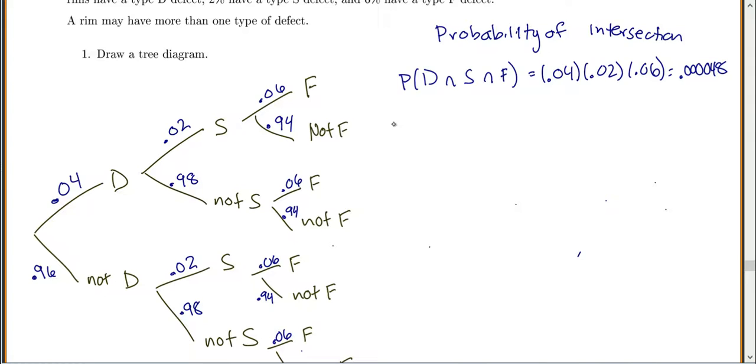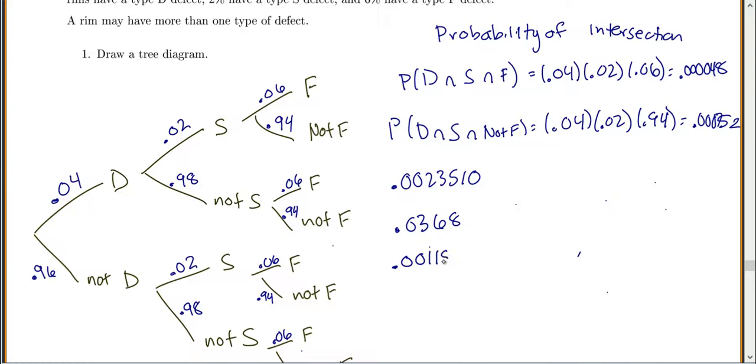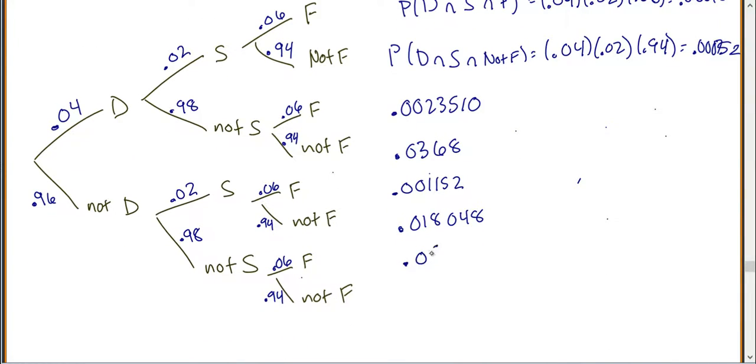We can continue for each of these. The probability for my next branch would be D and S and not F, which is 0.04 times 0.02 times 0.94, giving 0.000752. You can go through and do each of these. Try these on your own. The remaining probabilities are 0.002351, 0.001152, 0.018048, 0.056448, and 0.88435.